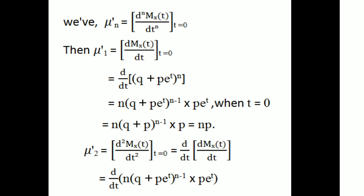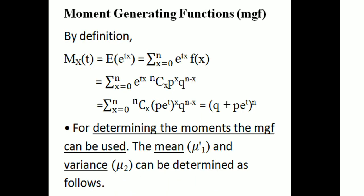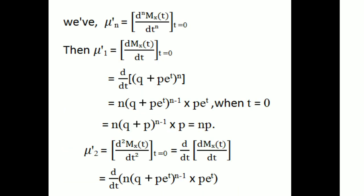mu₁' is equal to the first derivative of M_X(t) with respect to t, evaluated at t equal to 0. The moment generating function is M_X(t) equals q plus p e raised to t, all raised to n. Differentiating with respect to t using the chain rule, we get n times q plus p e raised to t, all raised to n minus 1, times p times e raised to t.